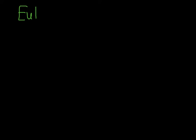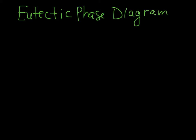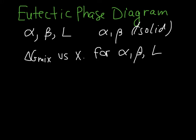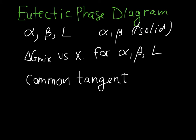Let's look at eutectic phase diagrams. A eutectic phase diagram can result if we have three different phases possible: alpha, beta, and liquid. Alpha and beta are both solid phases, which may have different crystal structures. To make our phase diagram, we plot delta G mixing versus X for each of these phases, giving us three curves. We use the common tangent construction to find regions where two phases are in equilibrium and to determine the composition of those phases.